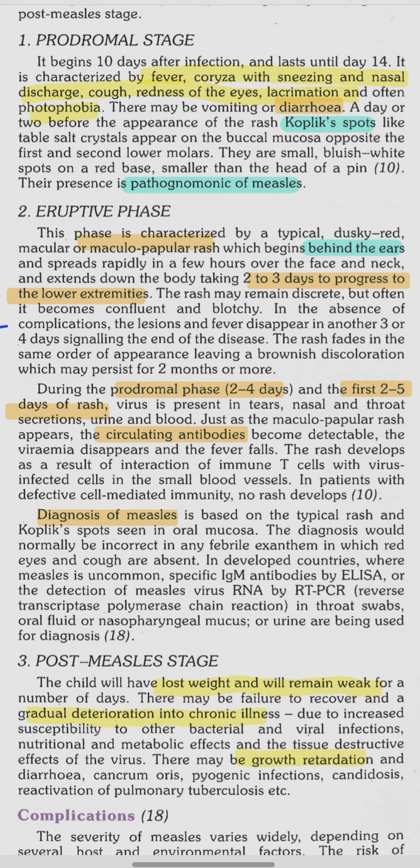The maculopapular rash appears because of a reaction between T-cells and virus-infected cells in the small blood vessels. If the person does not have good cell-mediated immunity, there will be no rash. As the rash appears, circulating antibodies rise in the blood, viremia disappears, and fever falls.